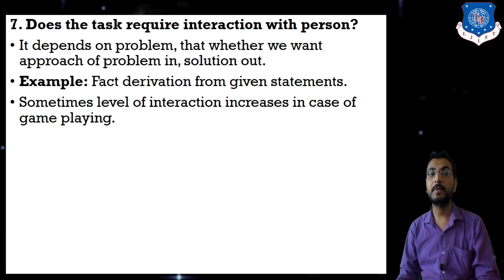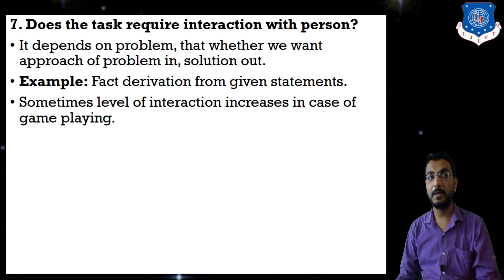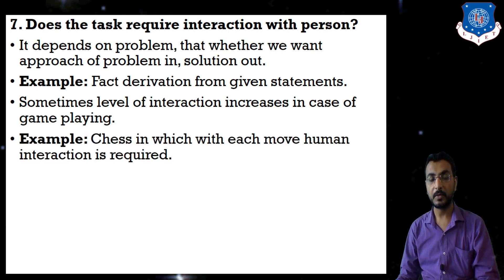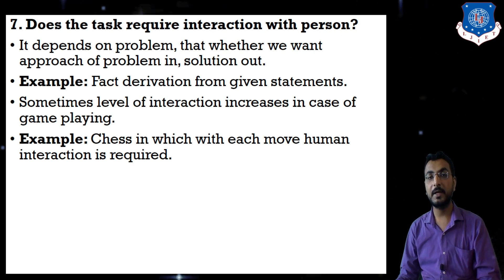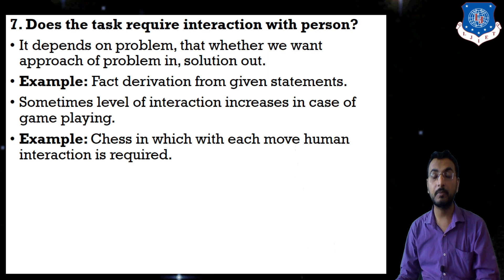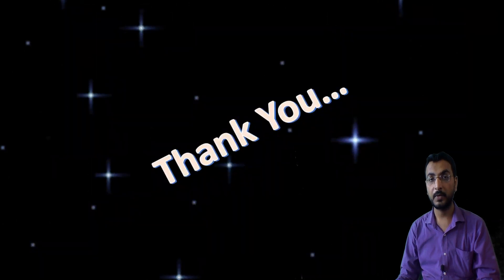Some level of interaction increases in game playing. For fact-solving, human interaction is not required, but in game playing it is. Chess is a game requiring a lot of human interaction — at each move the opponent takes a step, then the player responds, and so on. If an AI system is playing as the opponent — such as a robot acting as the opponent — human interaction is required at every step.